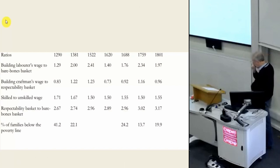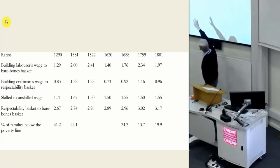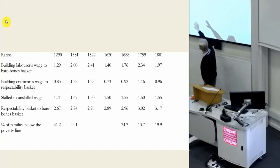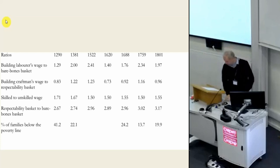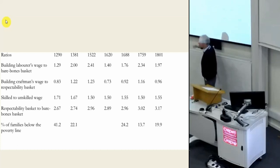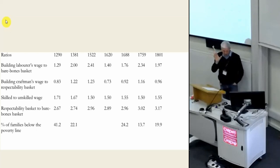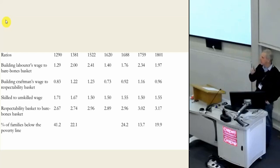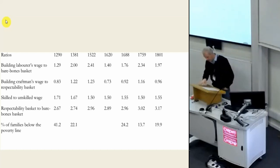Inequality has been much discussed by other disciplines. One economic historian looked at the costs of what he calls the 'bare bones basket' — the stuff that will just about keep you alive — or the 'respectability basket,' comparing costs of basic foodstuffs against how people generated income, producing estimates of what percentages of families were below the poverty line. In 1290, almost 40% of the population was below the poverty line.